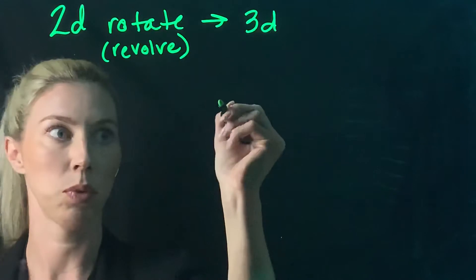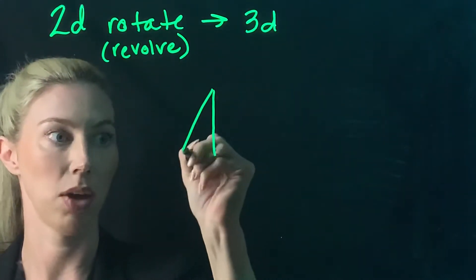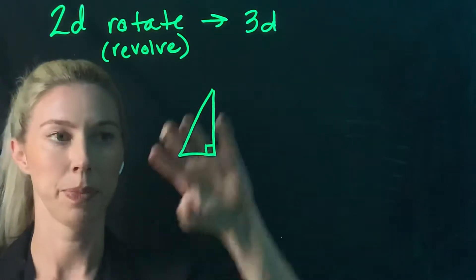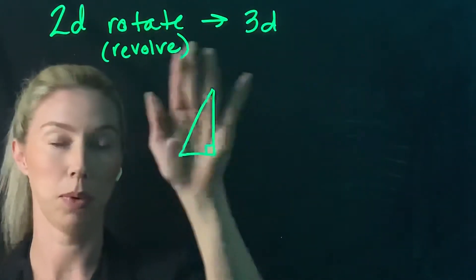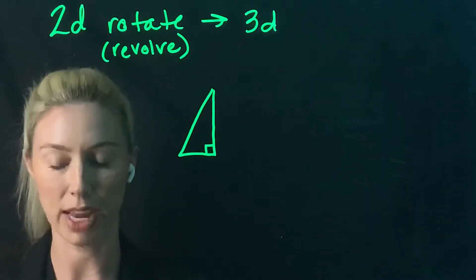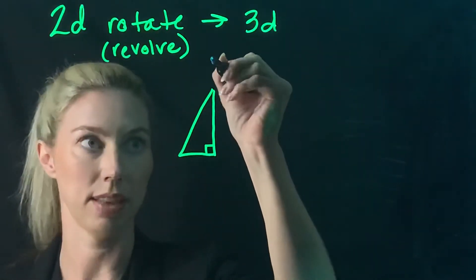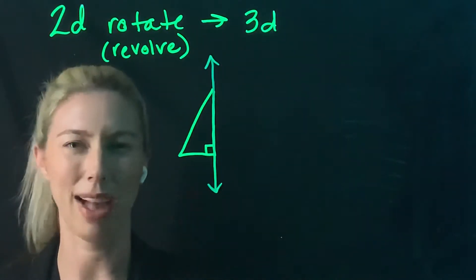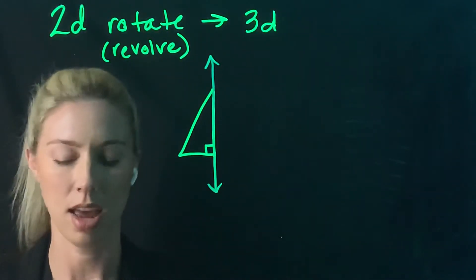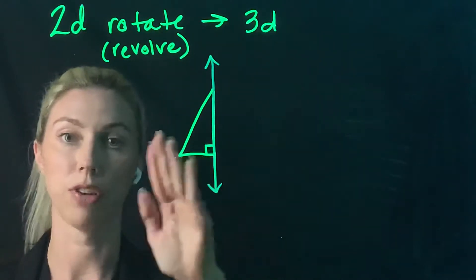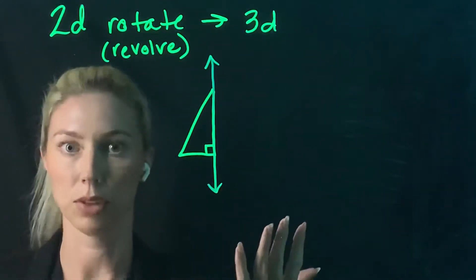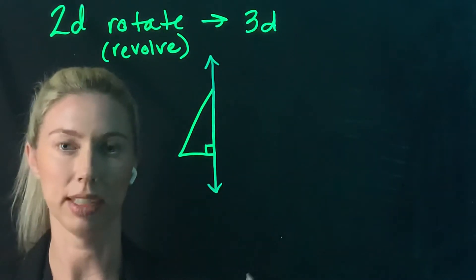Typically, when we've talked about rotation in class, a right triangle rotating would just turn. However, with rotating to create a 3D shape, they usually give you a line and say rotate around or about the line. What you're actually doing is revolving around the line, like the earth revolves around its axis.